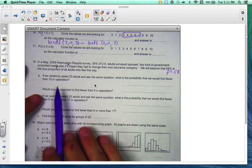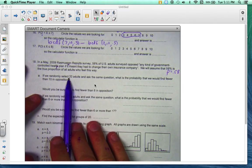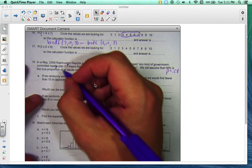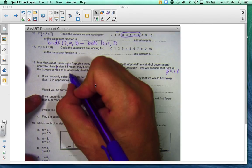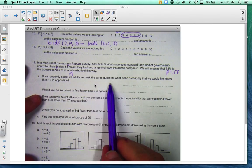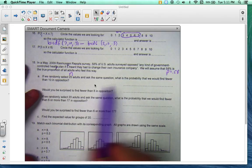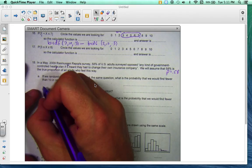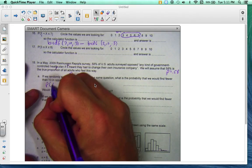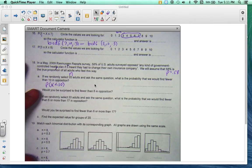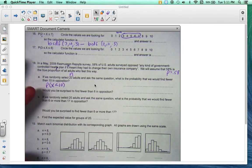Now, if we randomly select 20 adults, that's our n. And ask the same question, what is the probability that we would find fewer than 10 in opposition? So I want to know the probability that x is less than 10.